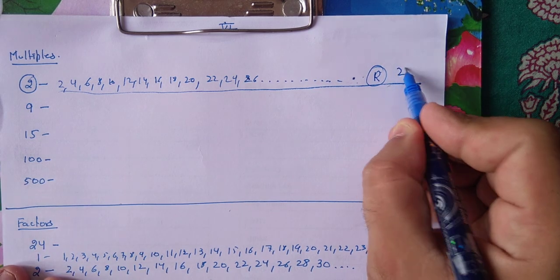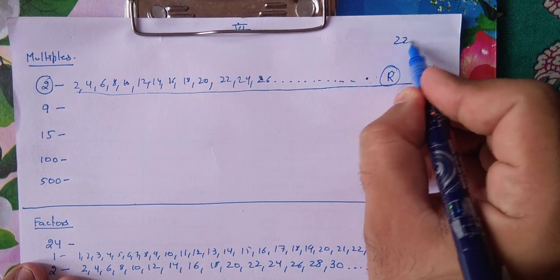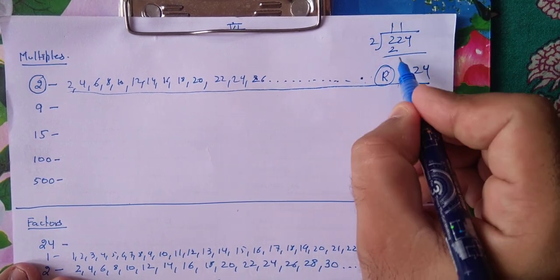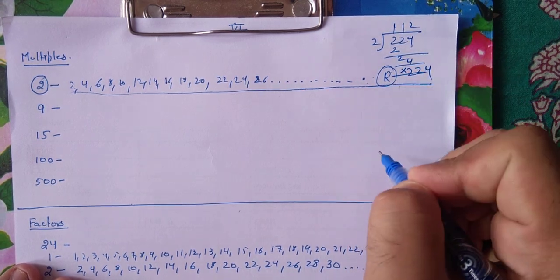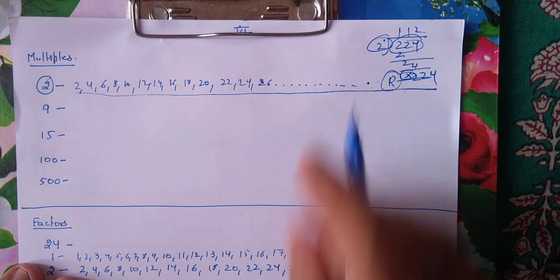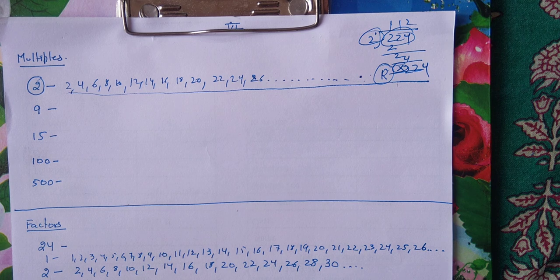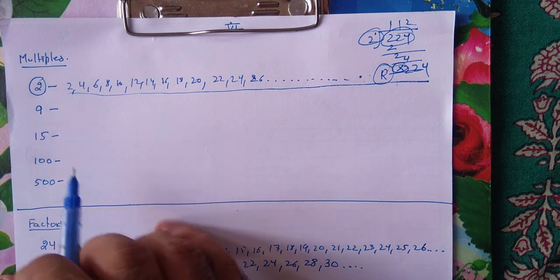एक example लेते हैं - 224. मुझे पता करना है यह 2 का multiple है की नहीं. तो 224 को 2 से divide करूँगा: 2 1s are 2, 2 1s are 2, 2 2s are 4, remainder 0. अगर remainder 0 आया, तो यह number 2 का multiple हुआ. और अगर remainder में कुछ बच जाता है, तो वो 2 का multiple नहीं होगा.